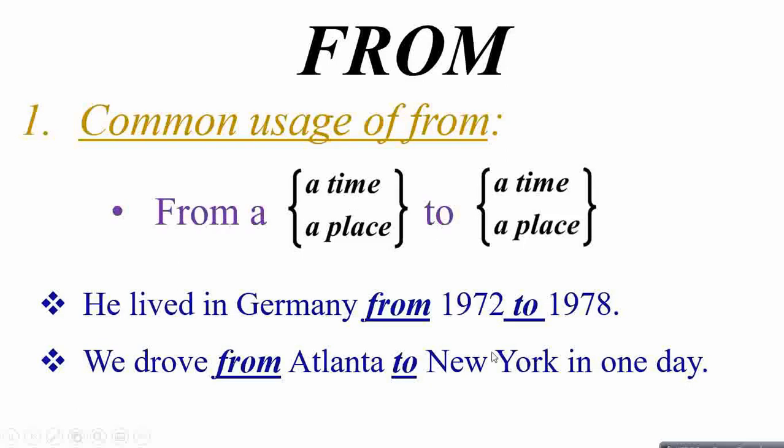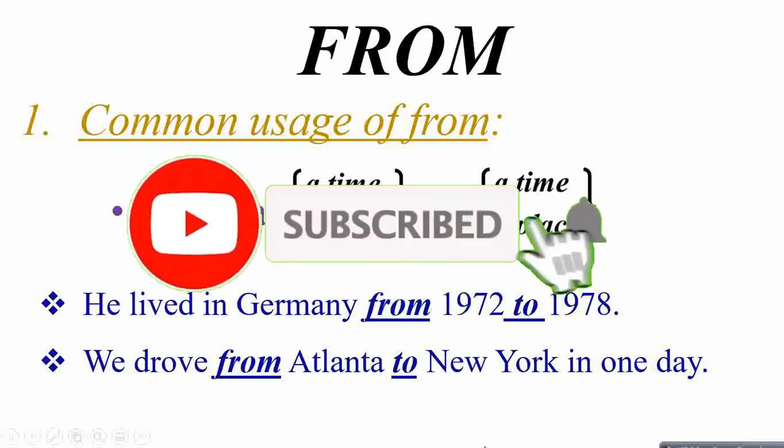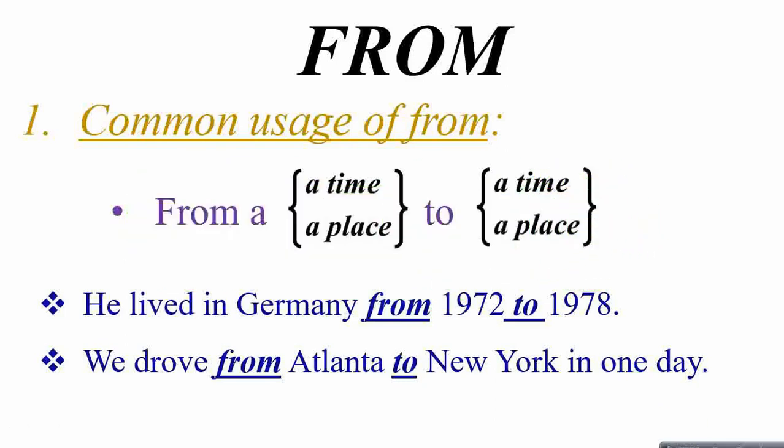From time to time and also from place to place. We drove from Atlanta to New York in one day. So again, the common uses for from is for time or for place. From time to time or place to place, we use this preposition from.